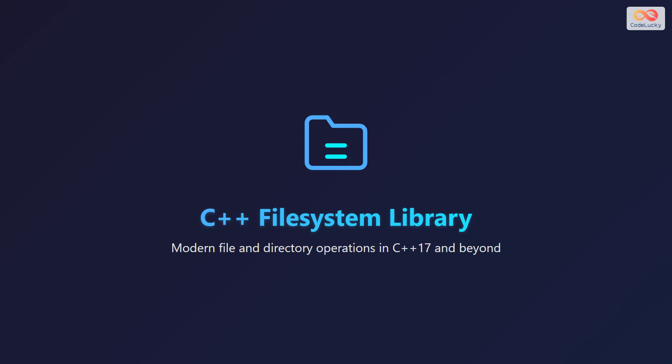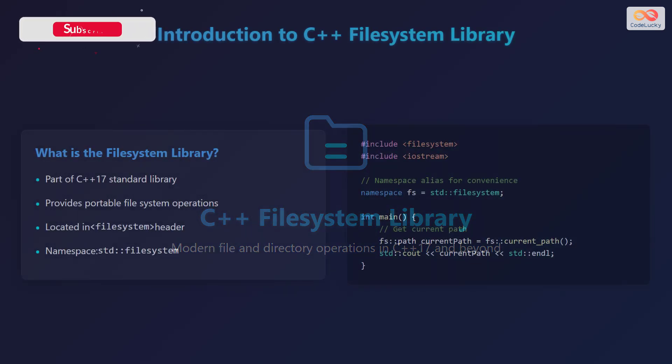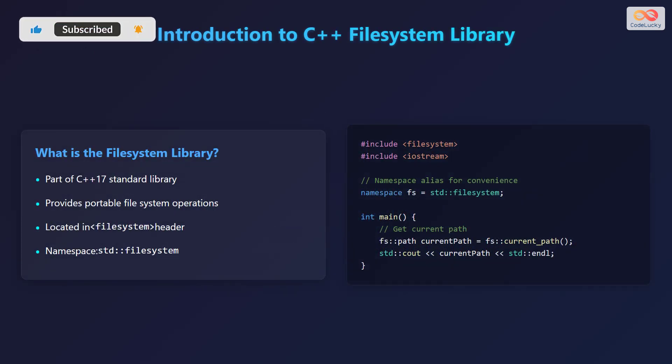Welcome to the C++ File System Library. This library provides modern file and directory operations in C++17 and beyond. It is part of the C++17 standard library, offering portable file system operations. You can find it in the filesystem header, and the namespace for this library is std::filesystem.